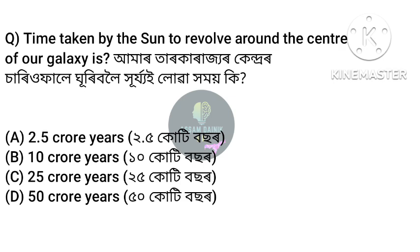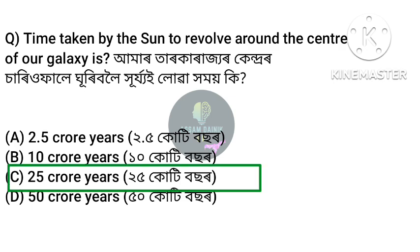Time taken by the sun to revolve around the center of our galaxy is — Anchar Option C: 25 crore years. The sun takes 25 crore years to revolve around the center of our galaxy.